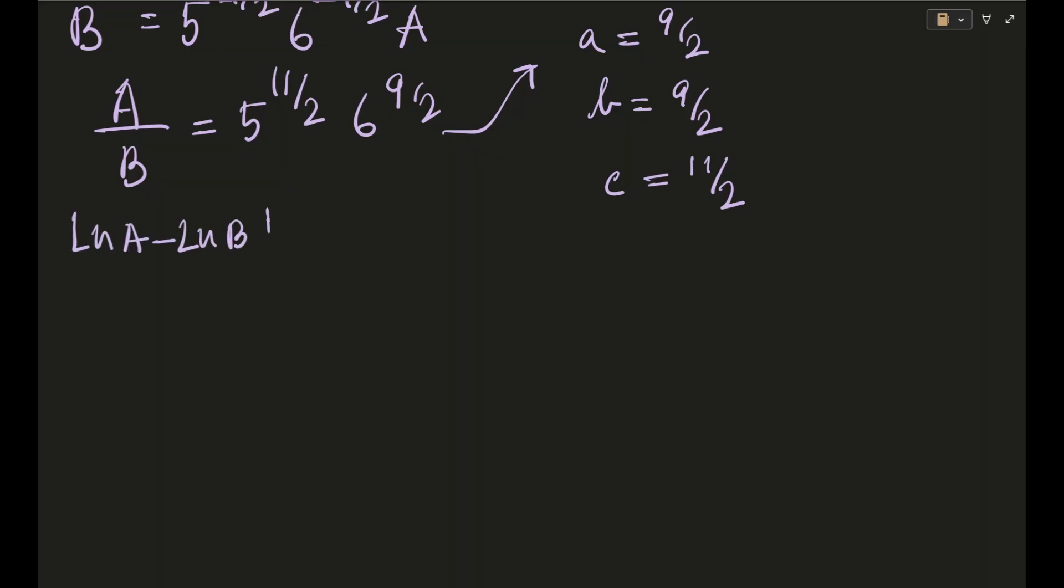Irrespective of whether you take mod or not this thing will obviously come out to a positive itself. So after that you split up. So basically these are the values of a, b and c. So from here we have to find out a - 2b + c right? So a - 2b + c will come out to be 9/2 - 2 into 9/2 plus 11/2 is equal to 1. Okay so that will be the final answer for this particular question.